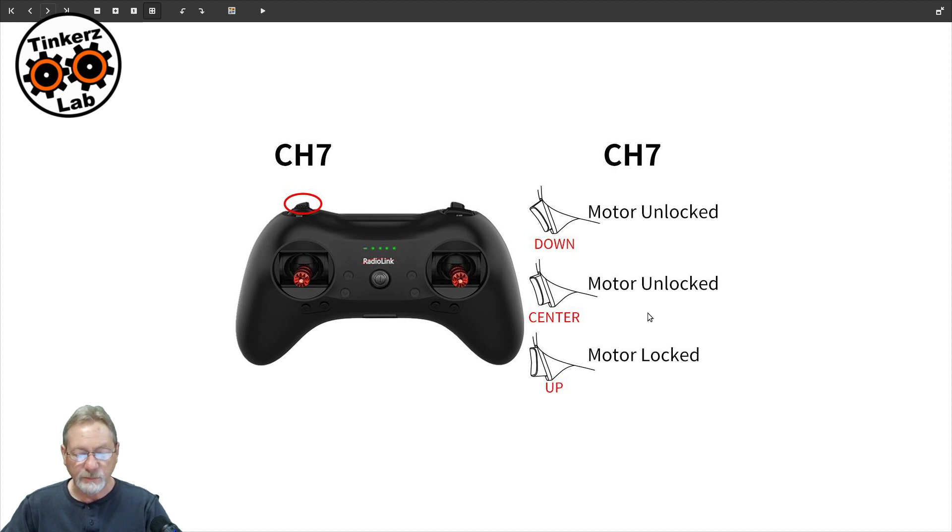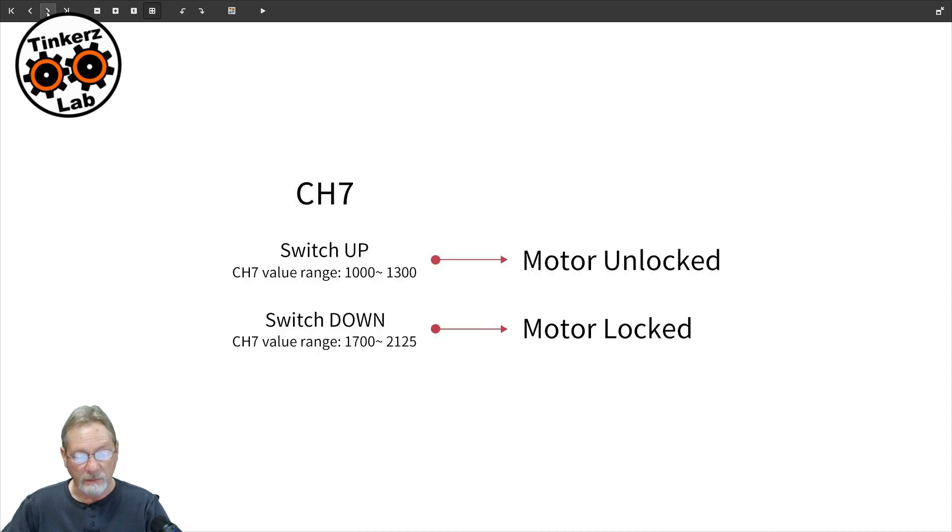You can see that two positions on the rocker are unlocking the motor and only one position on the rocker is locking the motor. So I like the fact that it comes with a throttle safety switch. In case you don't have the capability of programming that into your transmitter, it's already built into the gyro.